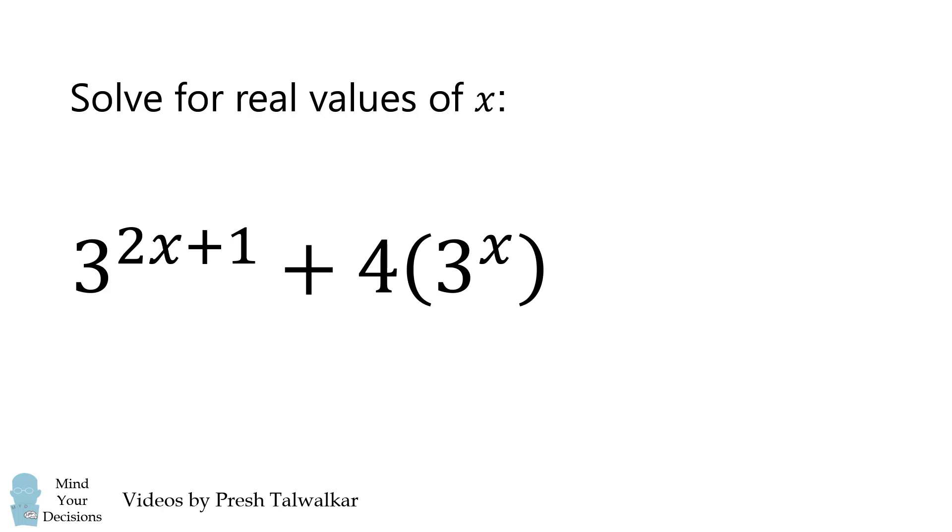Mind your decisions, I'm Presh Talwalkar. Solve for real values of x such that 3 to the power of 2x plus 1 plus 4 multiplied by 3 to the power of x minus 15 is equal to 0.